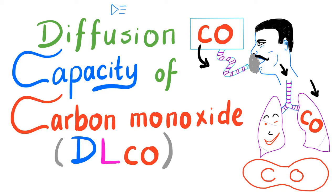Hey guys, it's Medicosis Perfectionelos, where medicine makes perfect sense. Today we'll continue our playlist on pulmonology and we'll talk about diffusion capacity of carbon monoxide, or DLCO. It's DLCO or TLCO — both are correct. We give the patient carbon monoxide, the patient inhales it, holds their breath for 10 seconds, then exhales, and we measure the carbon monoxide. This is the story of today's video.